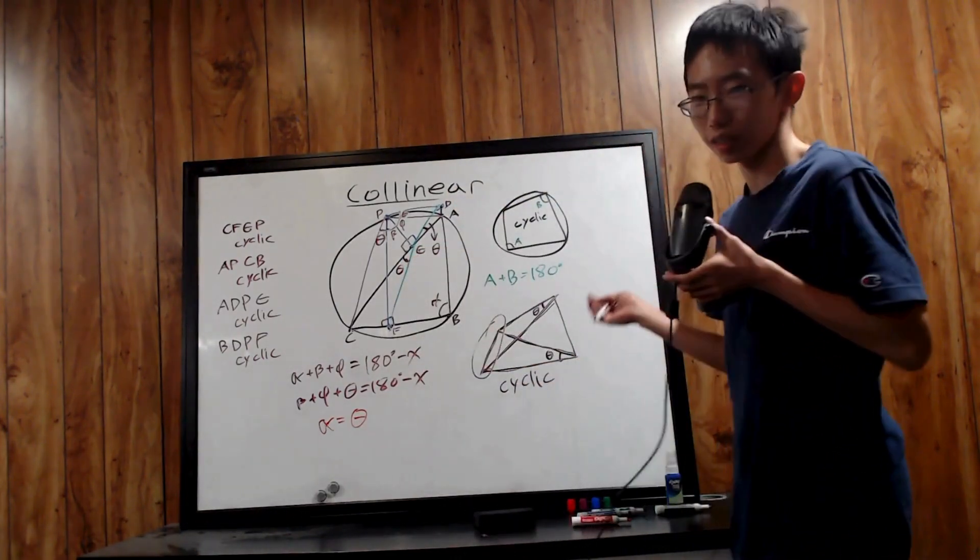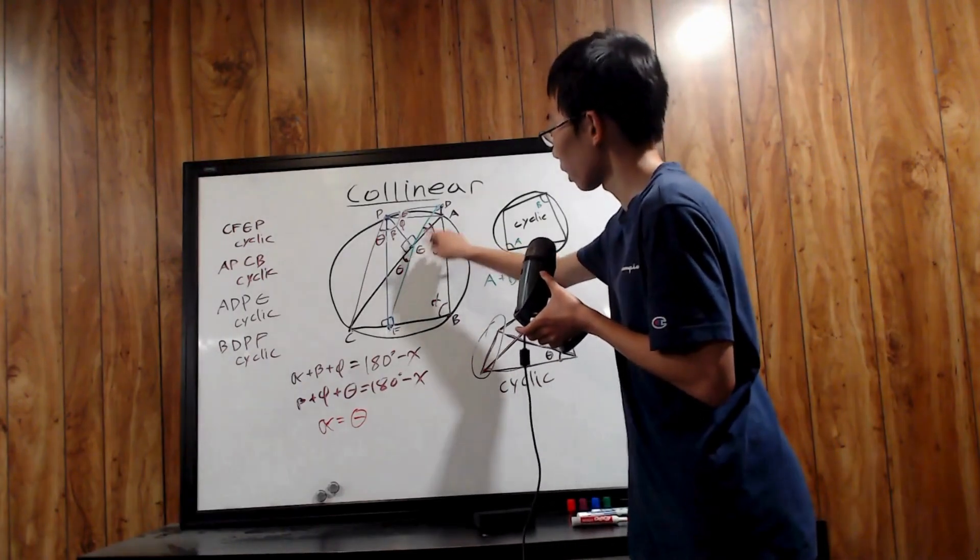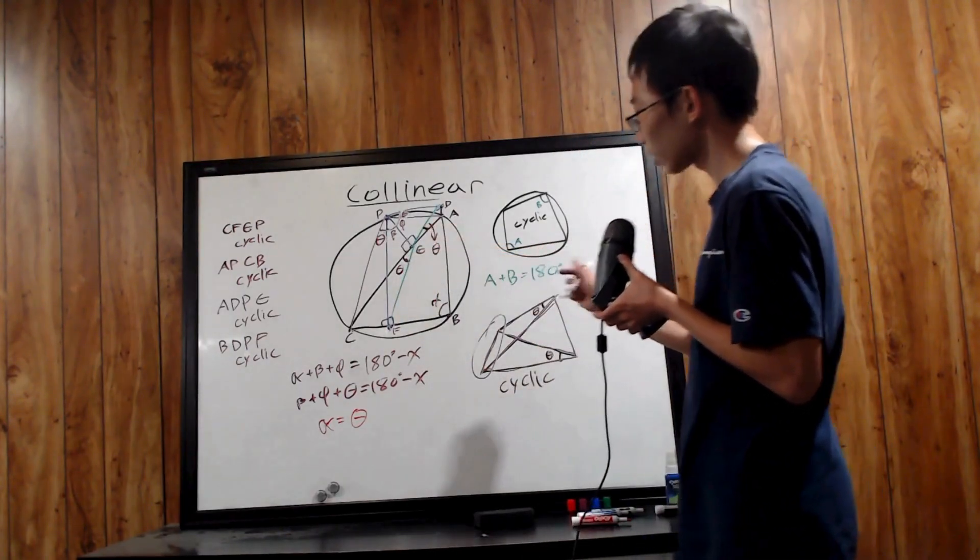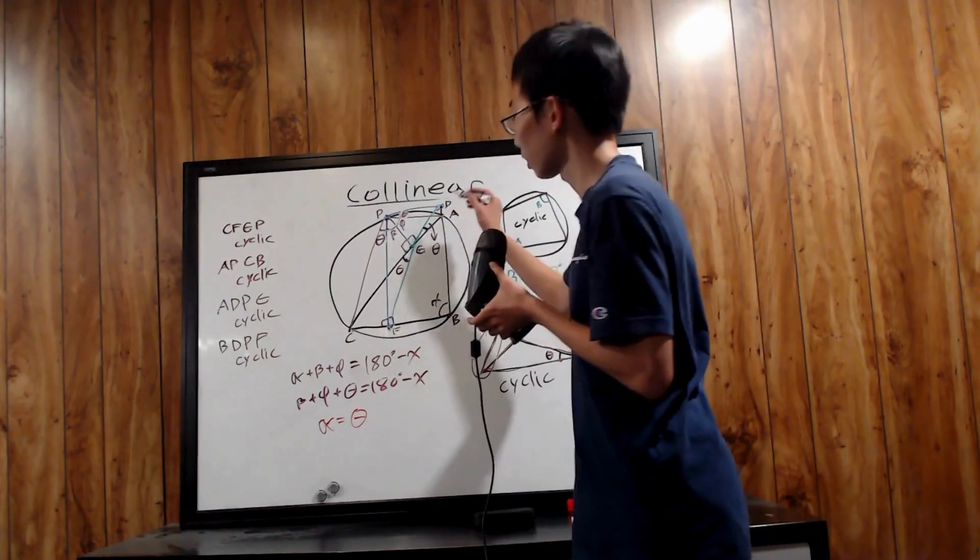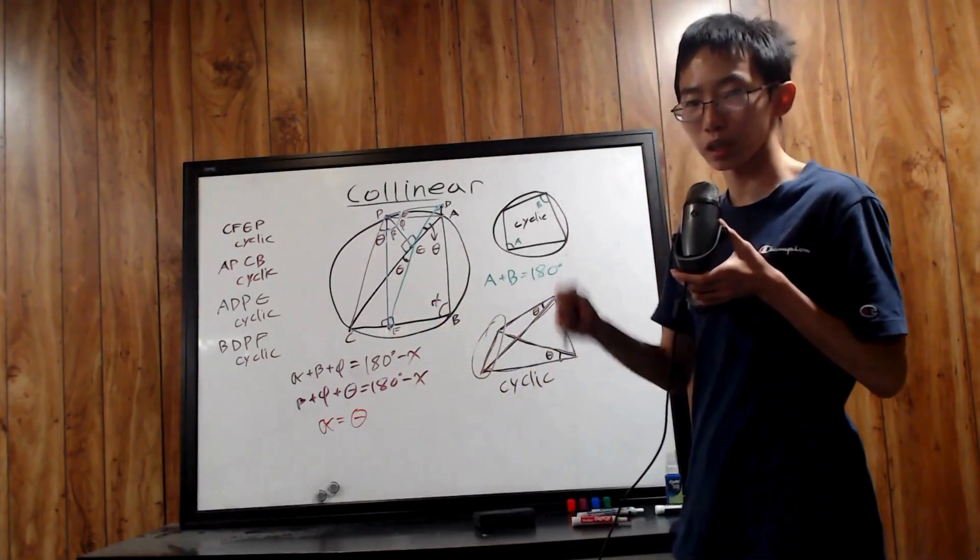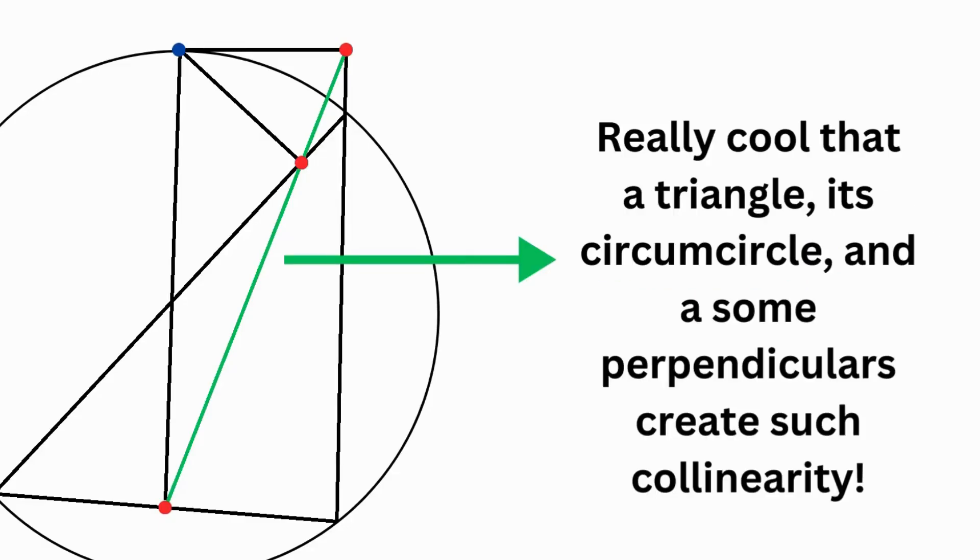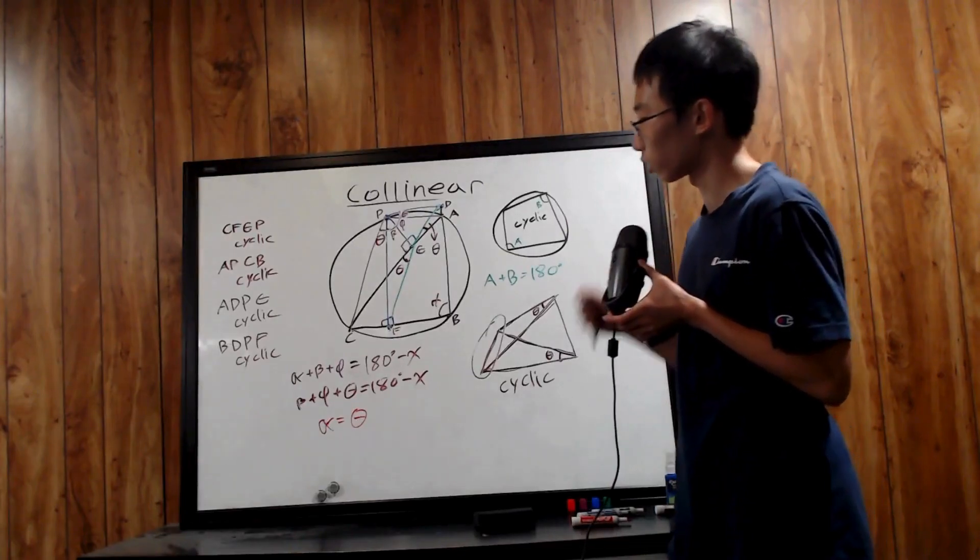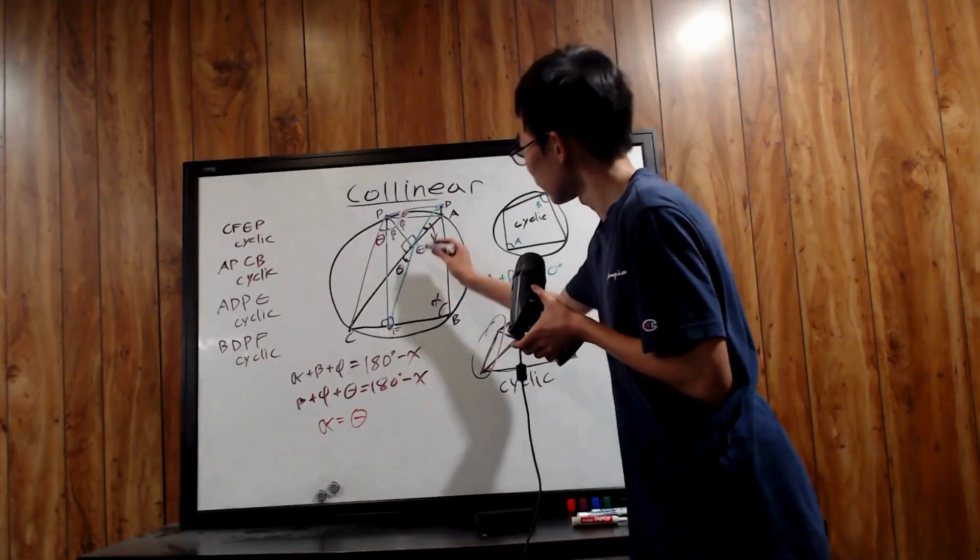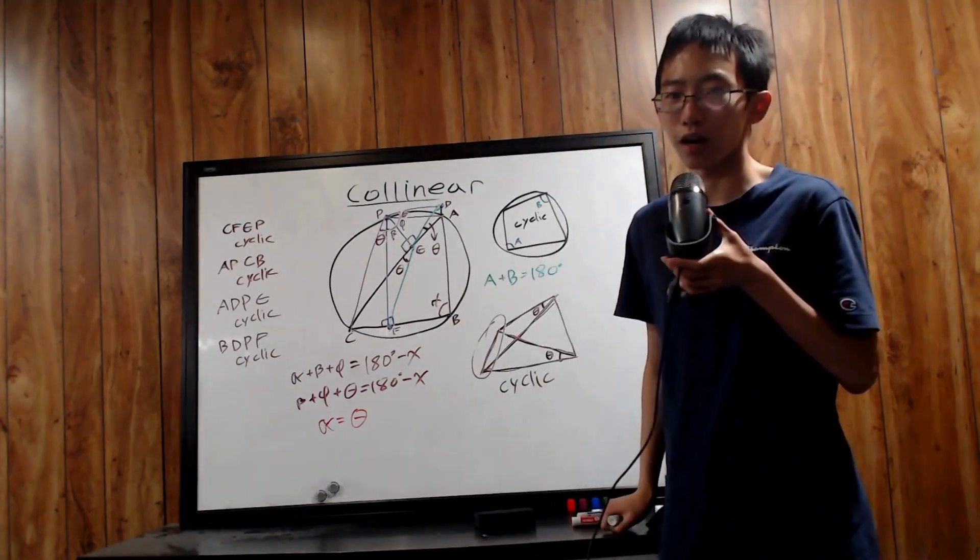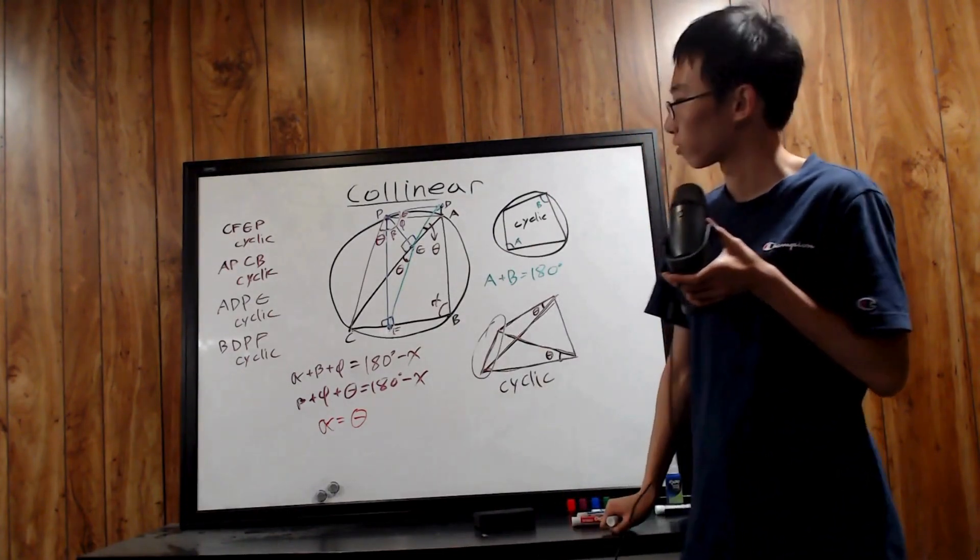But wait a minute, we're done. Notice that the opposite angles are both equal to theta. Thus, this green line over here connecting the three feet must be a perfectly straight line. Thus, we conclude that F, E, D, the three feet are indeed collinear. And that's it.